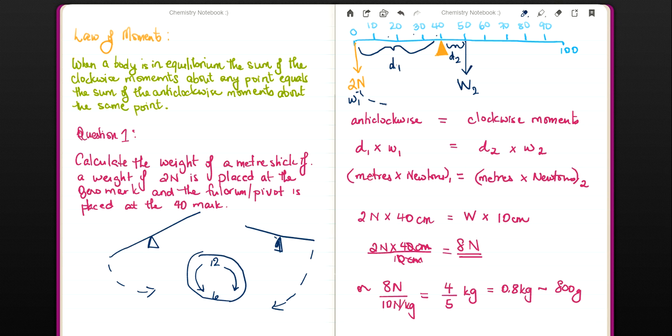So this, of course, if it were to topple this way, it would go anticlockwise. And this, if it were to topple, it would go clockwise. So we put all our anticlockwise stuff in the anticlockwise space. We have 2 newtons, and it's 40 centimeters of distance here in centimeters. And I was saying you're supposed to have it in meters, but because both sides have centimeters, they're going to cancel out anyway. And then the weight times, that's not going to be X, it's going to be times the weight times 10, because between 40 and 50 is 10.